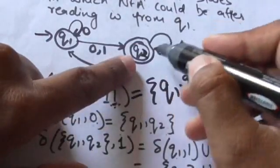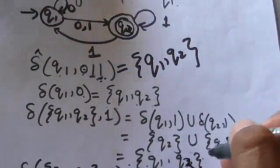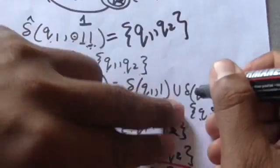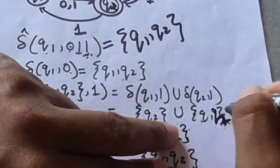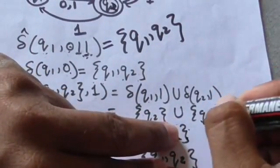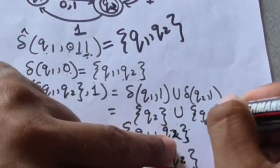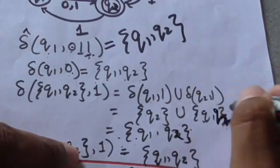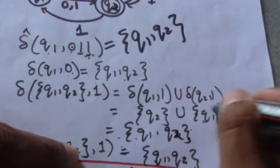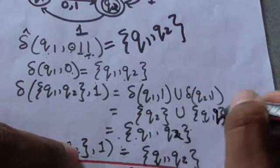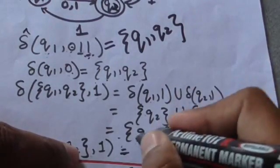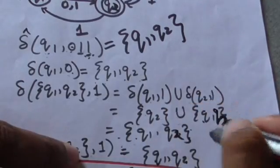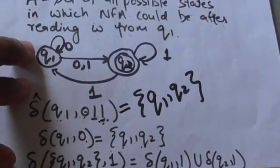When we apply 1 to state q2, it has two transitions: one to state q1 and another to state q2, so we get the set {q1, q2}. Taking the union of both results gives us the set {q1, q2}.